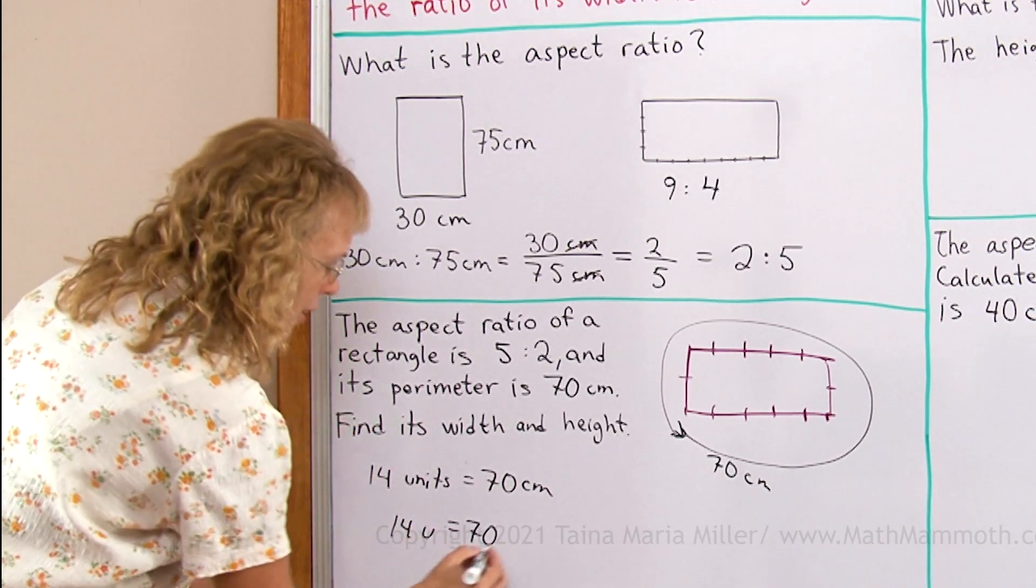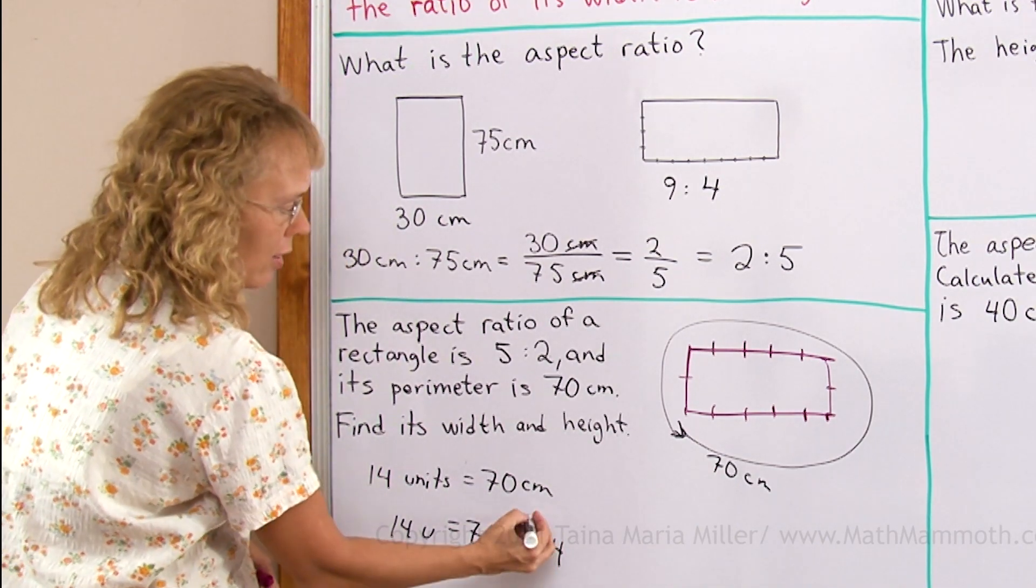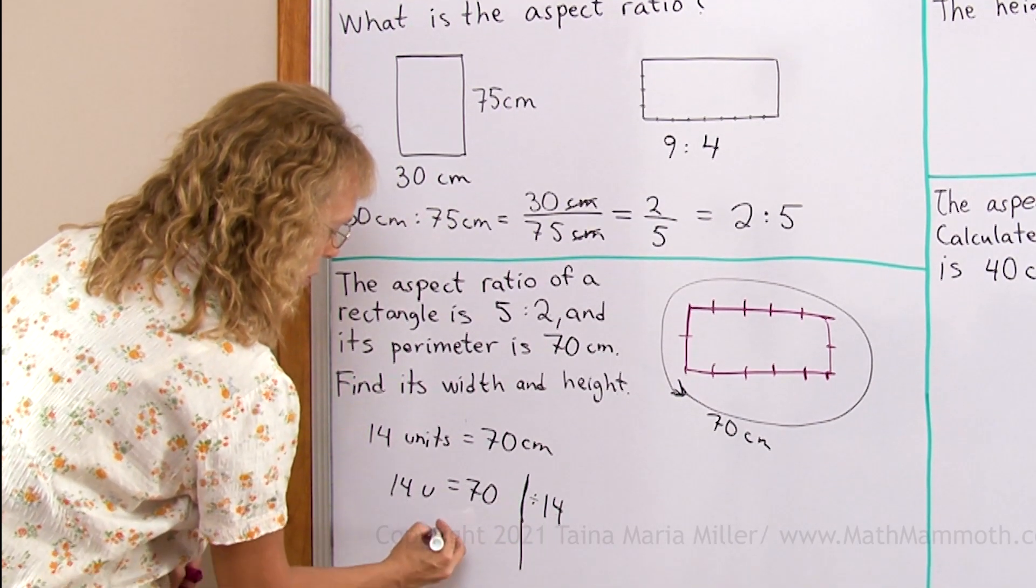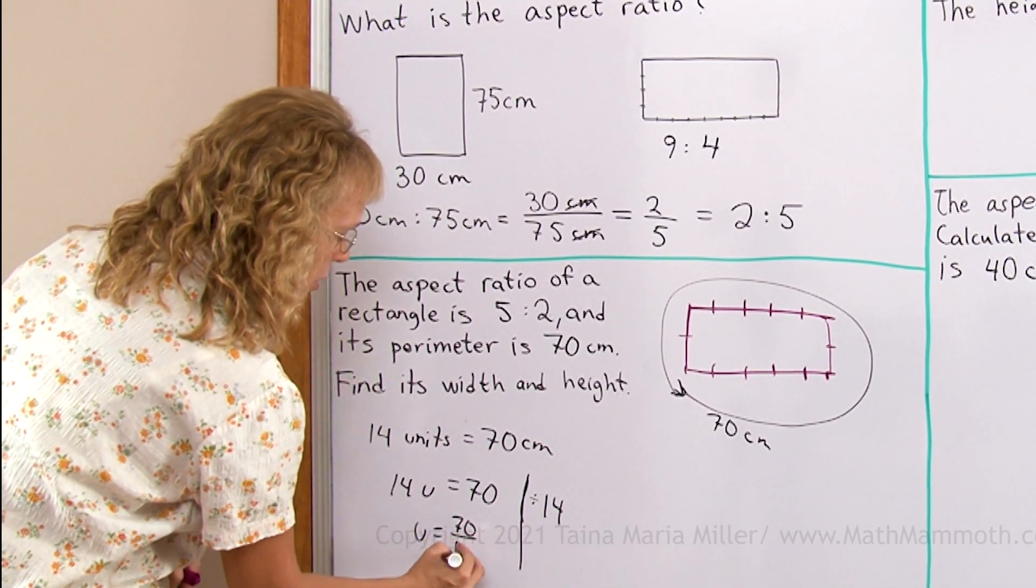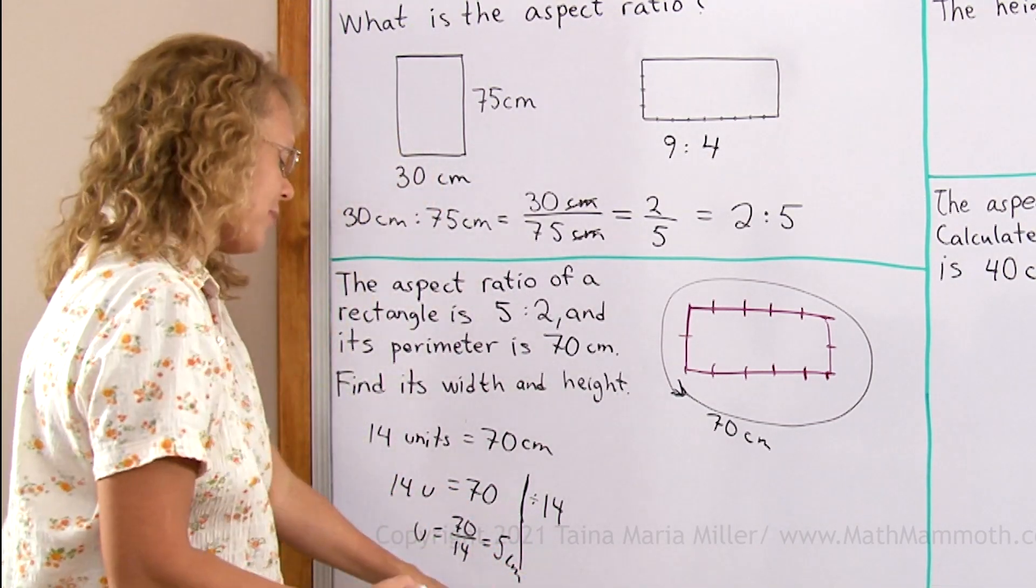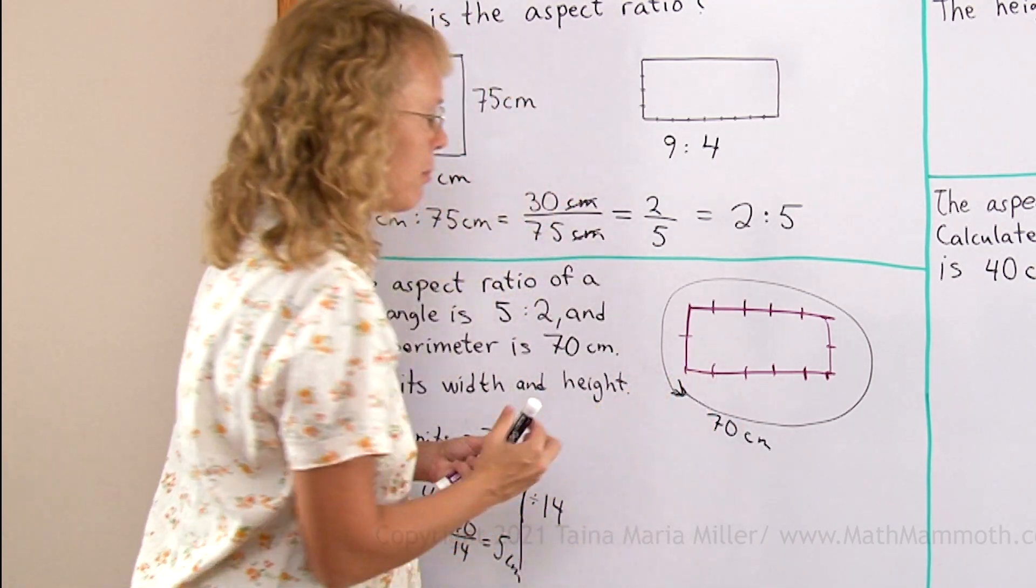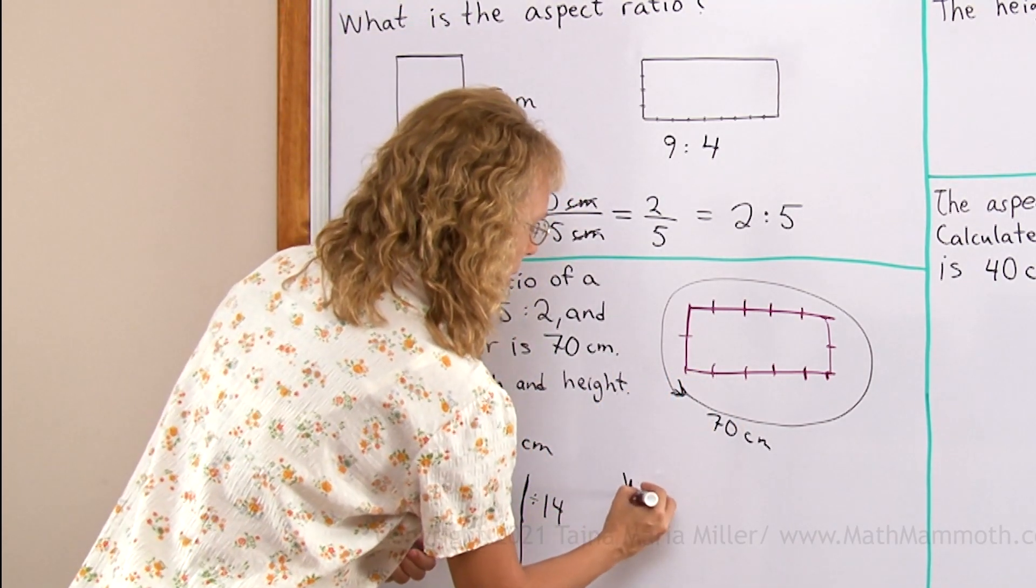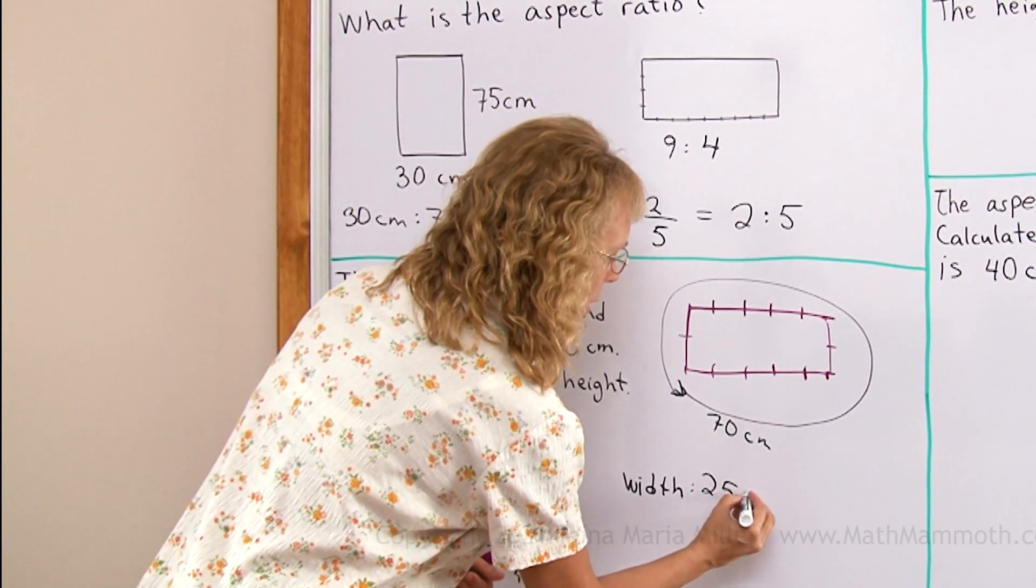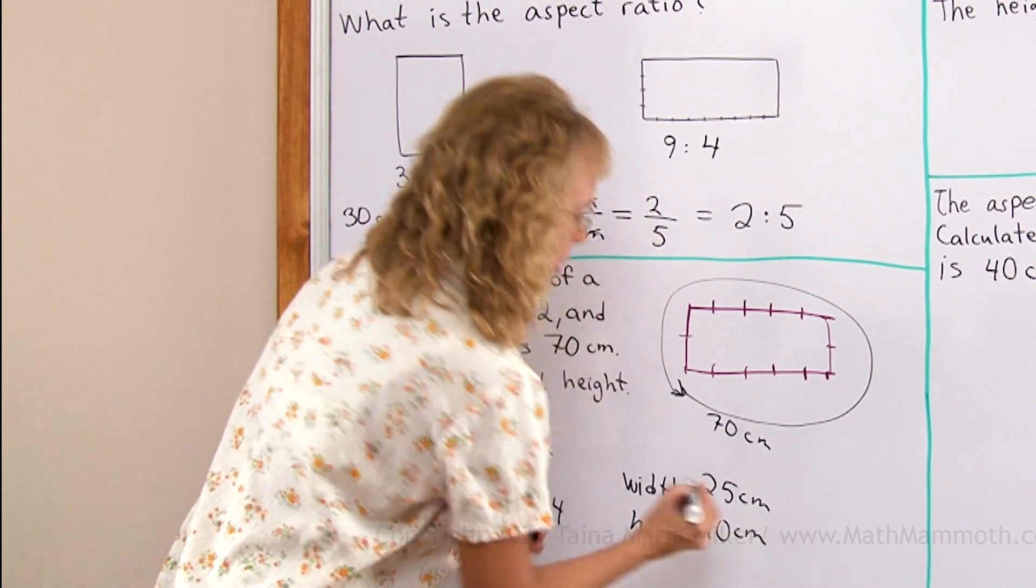In here, I will just divide. Okay? Divide both sides by 14. I'm denoting here. It's like my marginal note that I'm gonna divide both sides by 14. So we get u equals 70 over 14, which is 5 centimeters. Okay? Each unit here, each of these is 5 centimeters. So then the width is 5 times 5 centimeters, and the height is 2 times 5 centimeters or 10 centimeters.